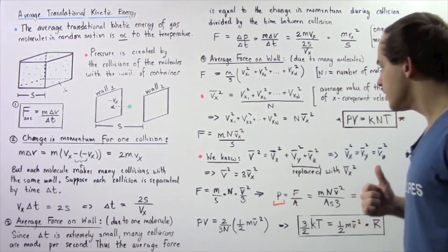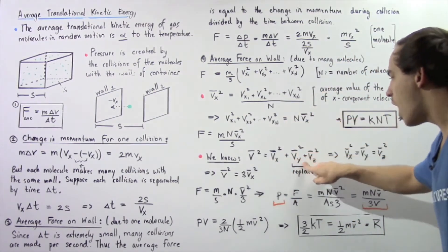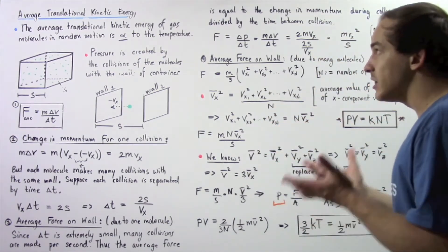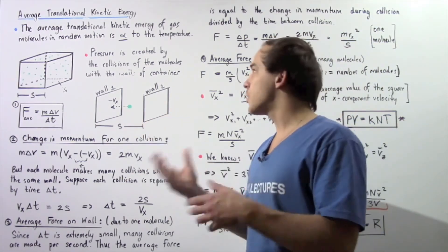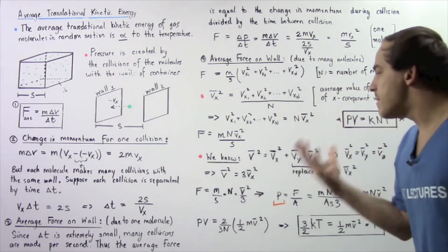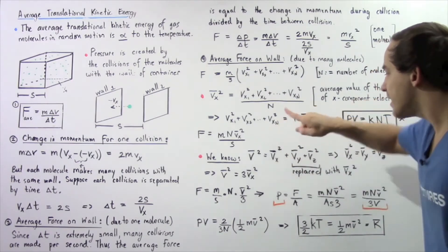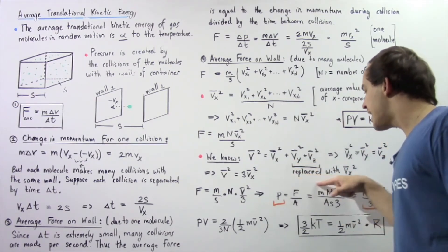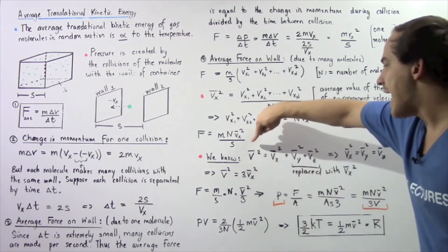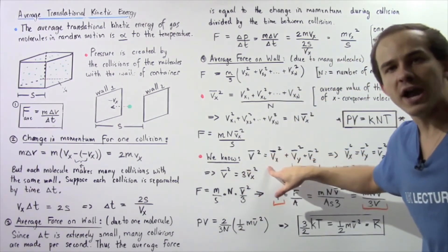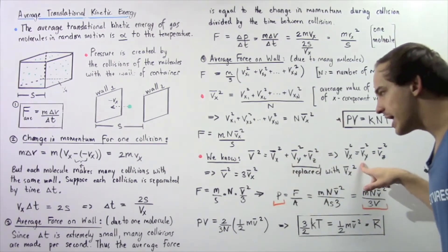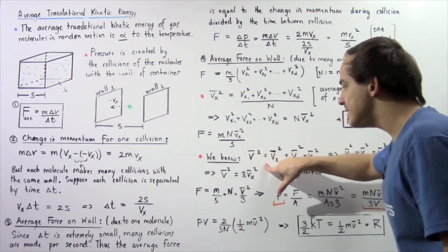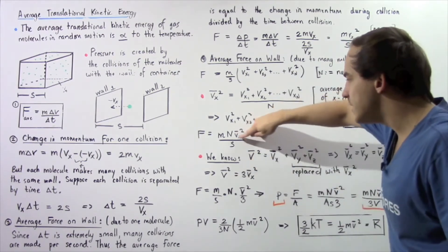Now we know from the Pythagorean theorem that Vx-average-squared plus Vy-average-squared plus Vz-average-squared equals V-average-squared. Because we are dealing with the kinetic molecular theory of gases and because the molecules move in arbitrary directions, it doesn't matter what direction we choose — Vx-average-squared equals Vy-average-squared equals Vz-average-squared. So V-average-squared equals 3 times Vx-average-squared, which means Vx-average-squared equals V-average-squared divided by 3. We plug that into our force equation.